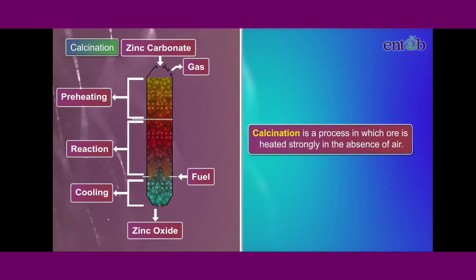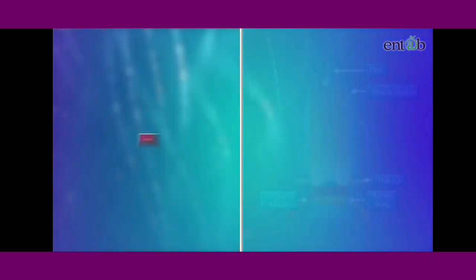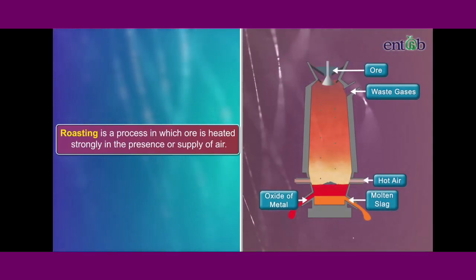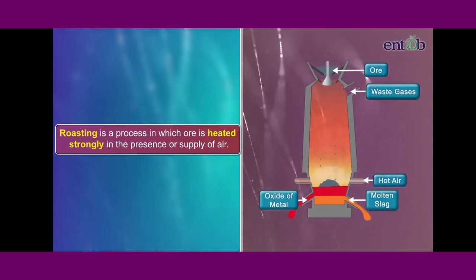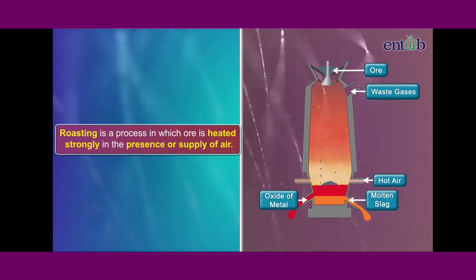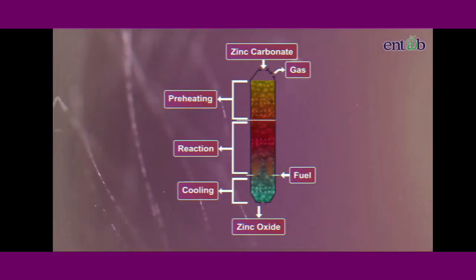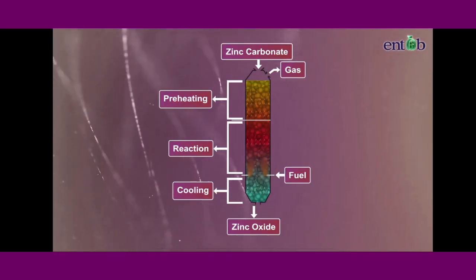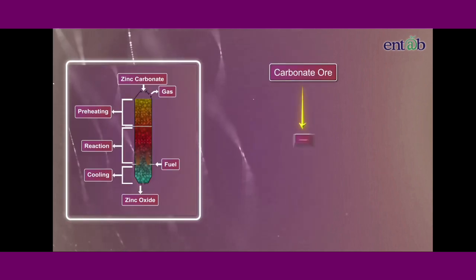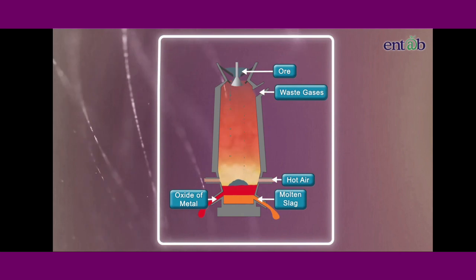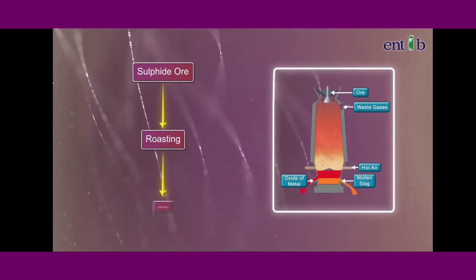Calcination is a process in which ore is heated strongly in absence of air. Whereas, roasting is a process in which ore is heated strongly in the presence or supply of air. Generally, calcination is used to convert carbonate ore to metal oxide, whereas roasting is used to convert sulfide ore to metal oxide.